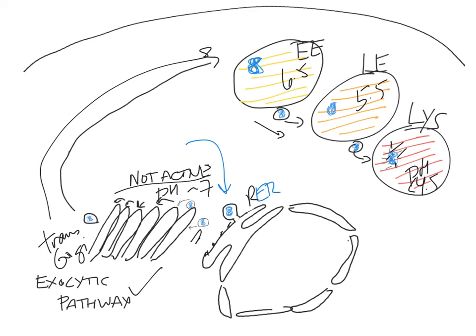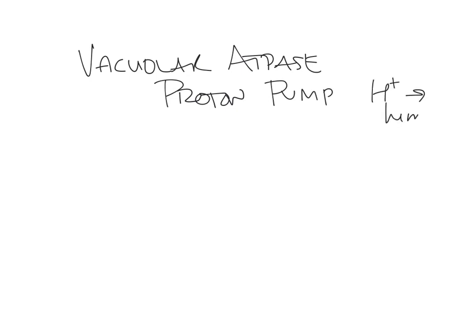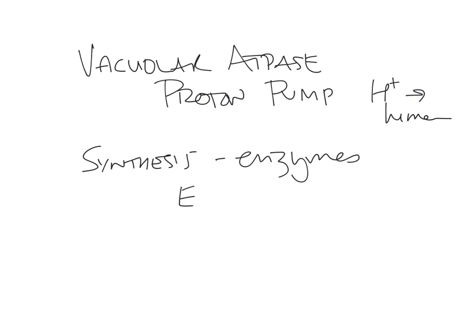So just remember that you need several things. You need the vacuolar ATPase, which is also called a proton pump — it's pumping protons into the lumen of the endocytic vesicles. And then you need the synthesis, or biosynthesis, of these enzymes that go through the exocytic pathway en route to their final destination, which could be early endosomes, late endosomes, or lysosomes. I hope that explains it for you. If it doesn't, please give me an email and I will help you out the best I can. Have a great day.